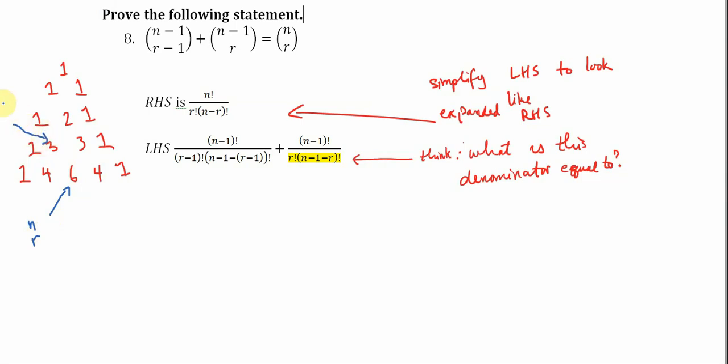The number above here is n minus one choose r minus one. And the other number is n minus one choose r.